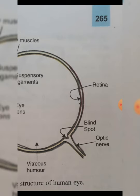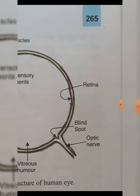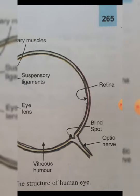The human eye works just like a camera. In the eye, the convex eye lens forms a real and inverted image of an object on the light-sensitive screen called the retina. Similarly, in a camera, a convex camera lens forms a real and inverted image of an object on the light-sensitive photographic film. So in our eye we have the retina, while in a camera we have the photographic film.